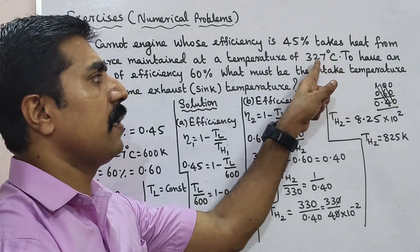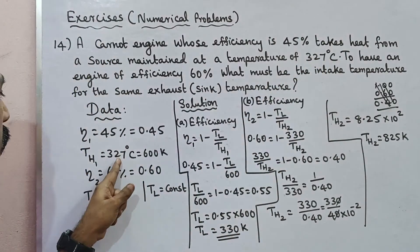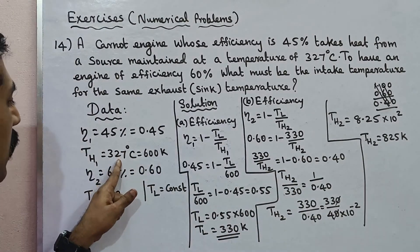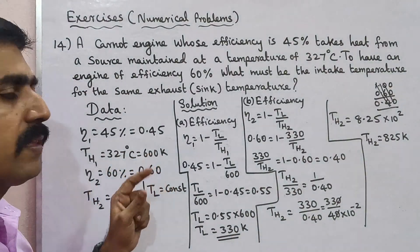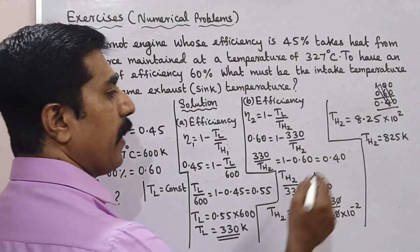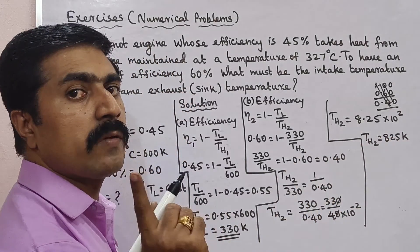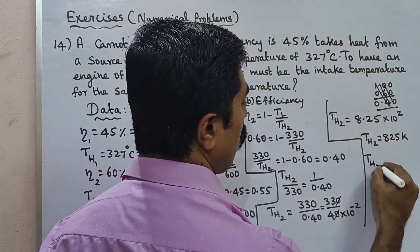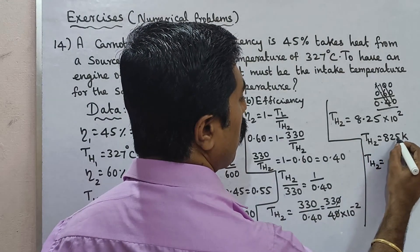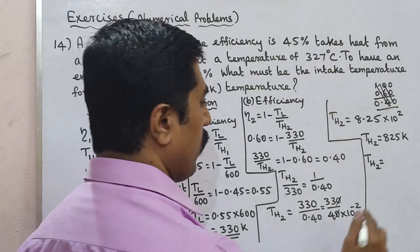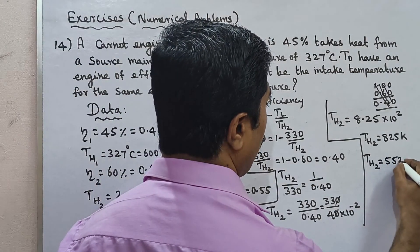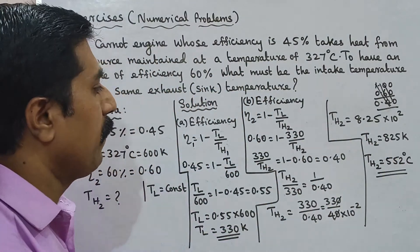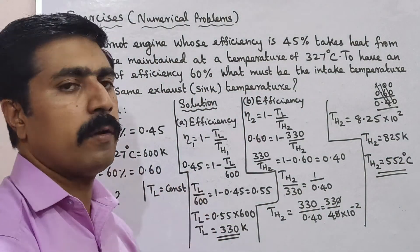The question asks for the answer in degrees Celsius. Converting from Kelvin to Celsius: Celsius equals Kelvin minus 273. So TH2 in Celsius equals 825 minus 273, which equals 552 degrees Celsius.